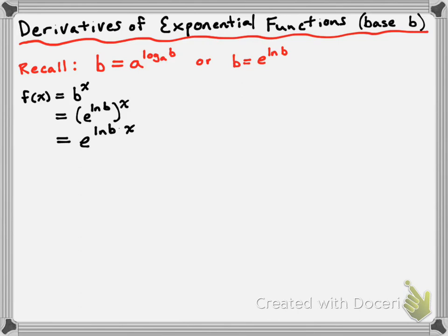So let's take the derivative of the function in its current format. To find f prime of x, we look at f of x in its current form: e to the power of ln of b times x. Now b is just some positive constant, so the ln of b is just a constant. So what I have is e to the power of some constant times x. This is an exponential function with a base of e, but it's also a composite function — it's like I've taken e to the x and replaced the x with ln of b times x. That means to take the derivative, I'm going to be using the chain rule. The chain rule says take the derivative of the outer function first, and since the outer function acts like e to the power of x, its derivative is itself.